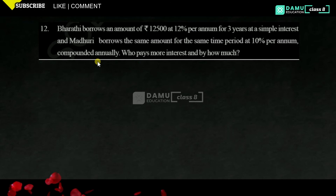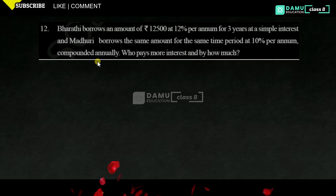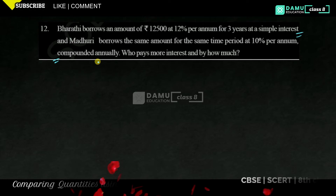In this problem, Bharati borrows 12,500 rupees at 12% per annum for 3 years at simple interest. Madhuri borrows the same amount for the same time period at 10% per annum compounded annually. We need to find who pays more interest and by how much.